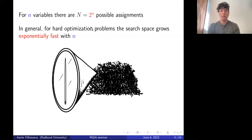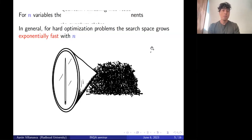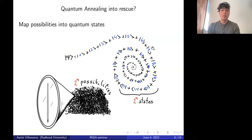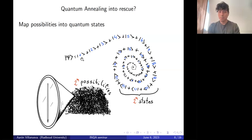Quantum annealing comes to the rescue. In the quantum adiabatic framework, we map each one of the possibilities of our optimization problem into a state of our quantum system, which is described by an adiabatic Hamiltonian.